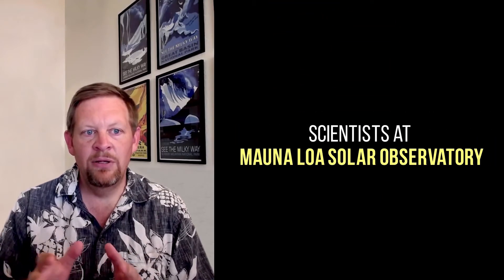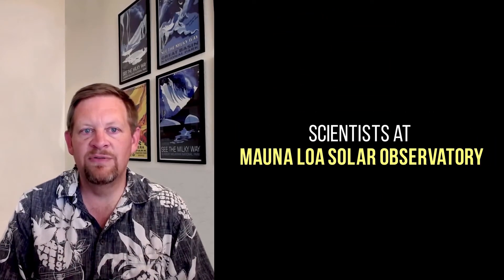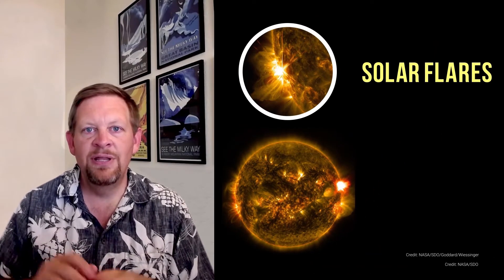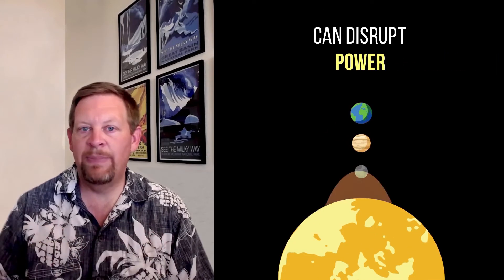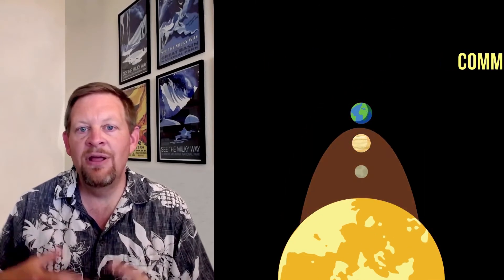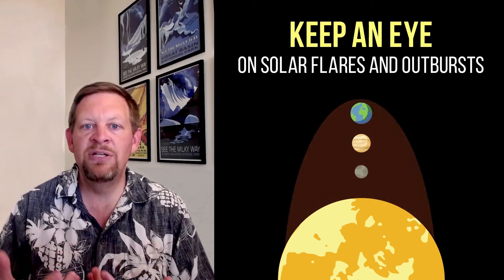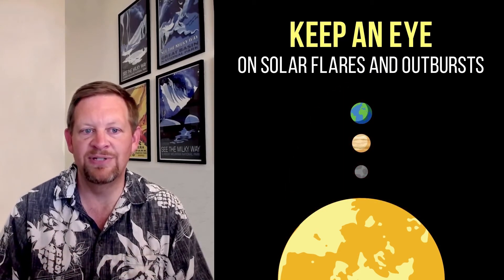Here on the Big Island, scientists at the Mauna Loa Solar Observatory monitor the Sun every day for flares and outbursts. These flares and outbursts, if they happen to hit Earth, can disrupt power and communication systems. They keep an eye on the Sun so that we know when these things are going to happen and can help protect those systems.